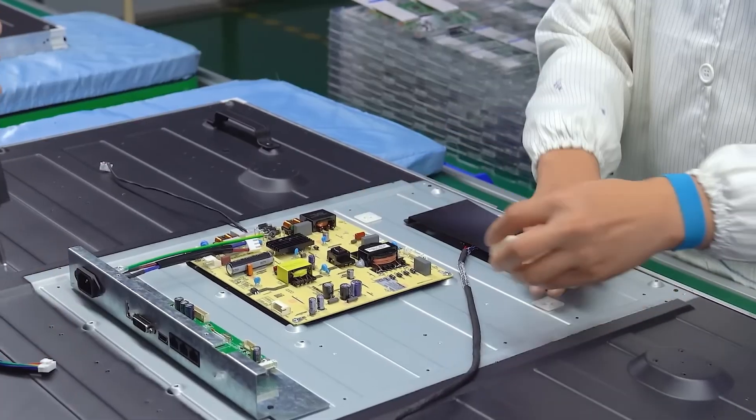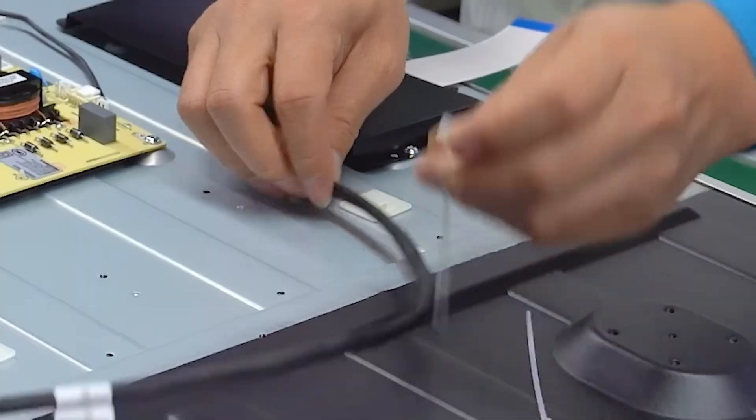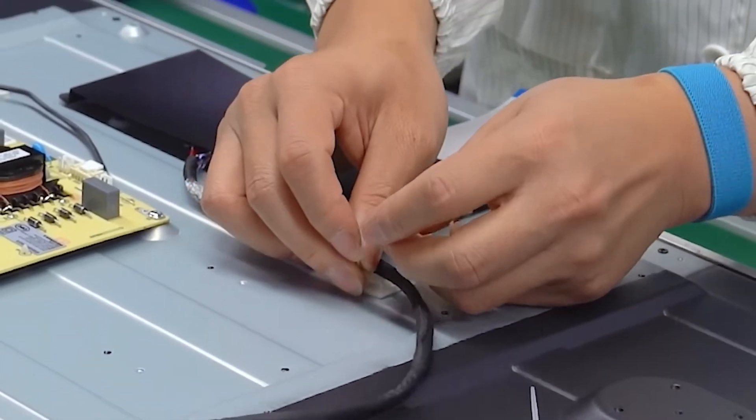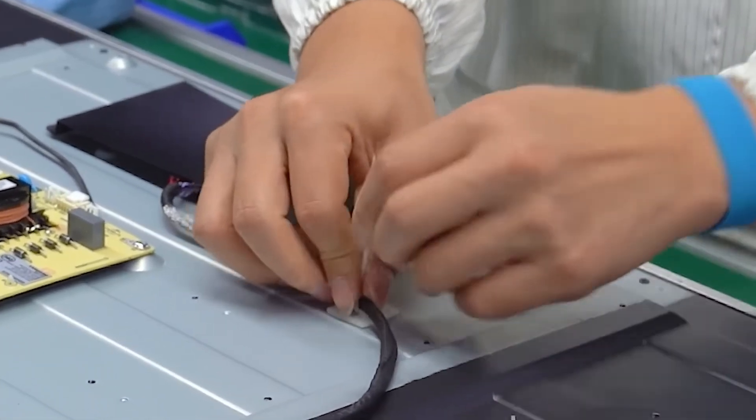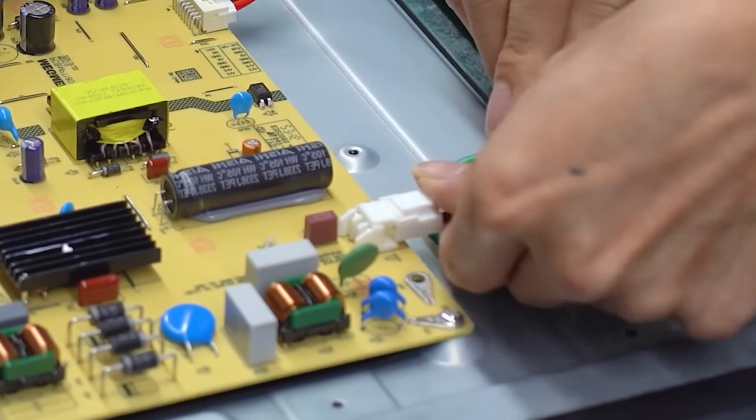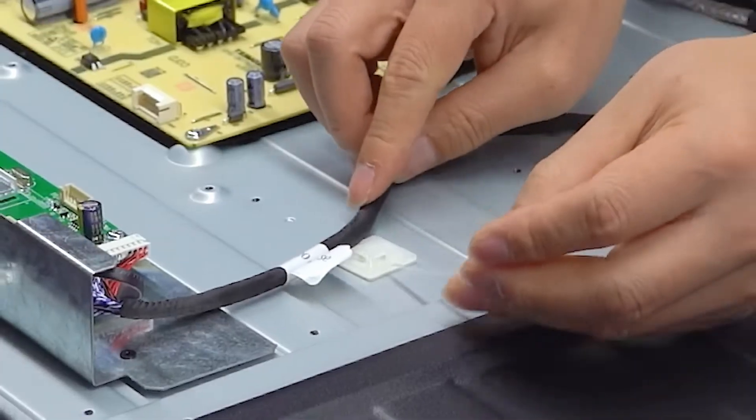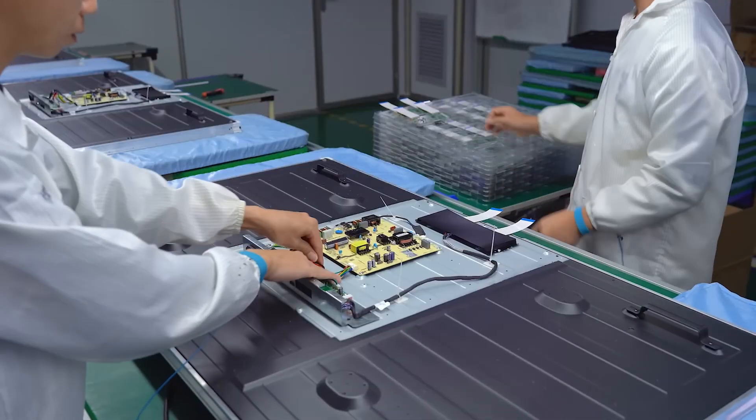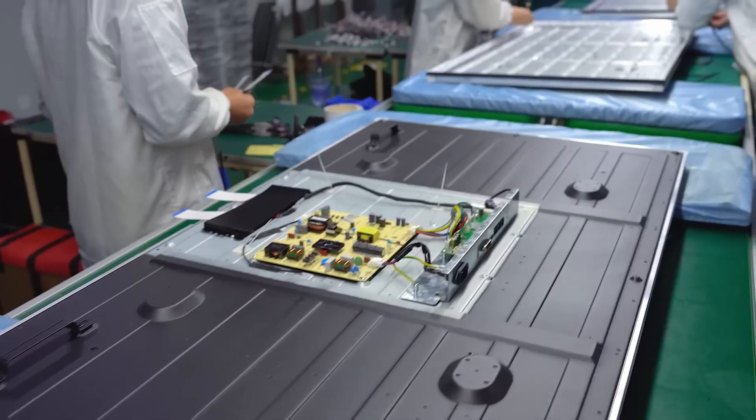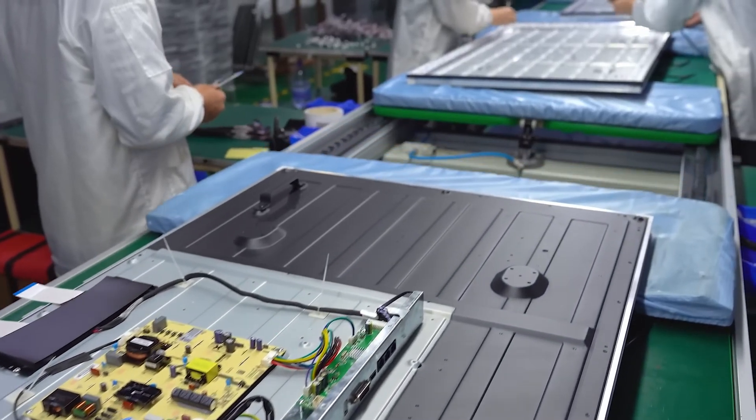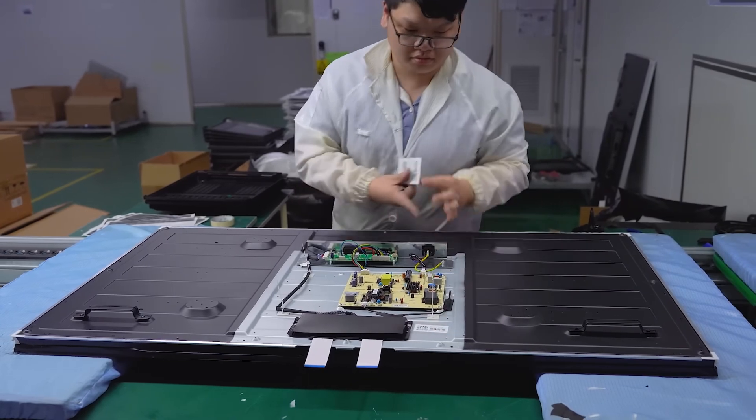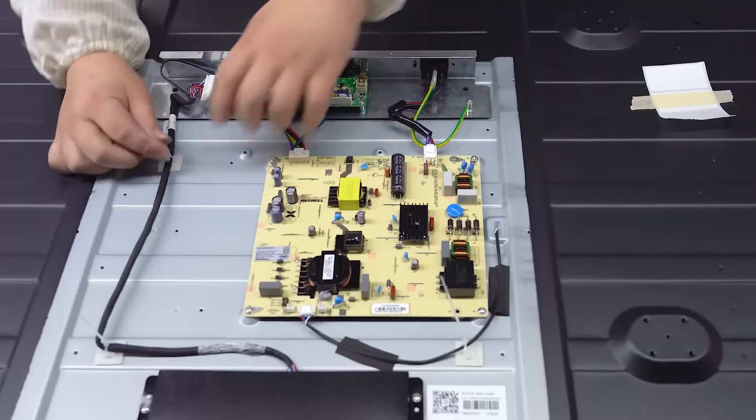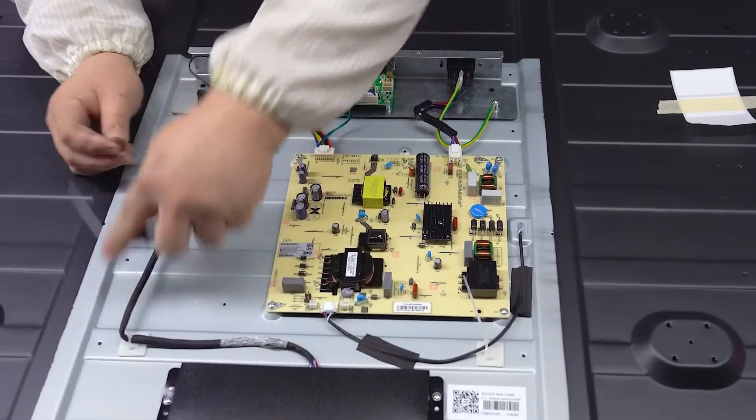At the heart of these electronics are video converters and signal processors. These components take the incoming video signal, whether it's from a streaming service, a Blu-ray player, or a gaming console, and convert it into a format that the LCD panel can display. This involves decoding the signal, scaling it to the correct resolution, and ensuring that the timing is perfectly synchronized with the refresh rate of the screen.